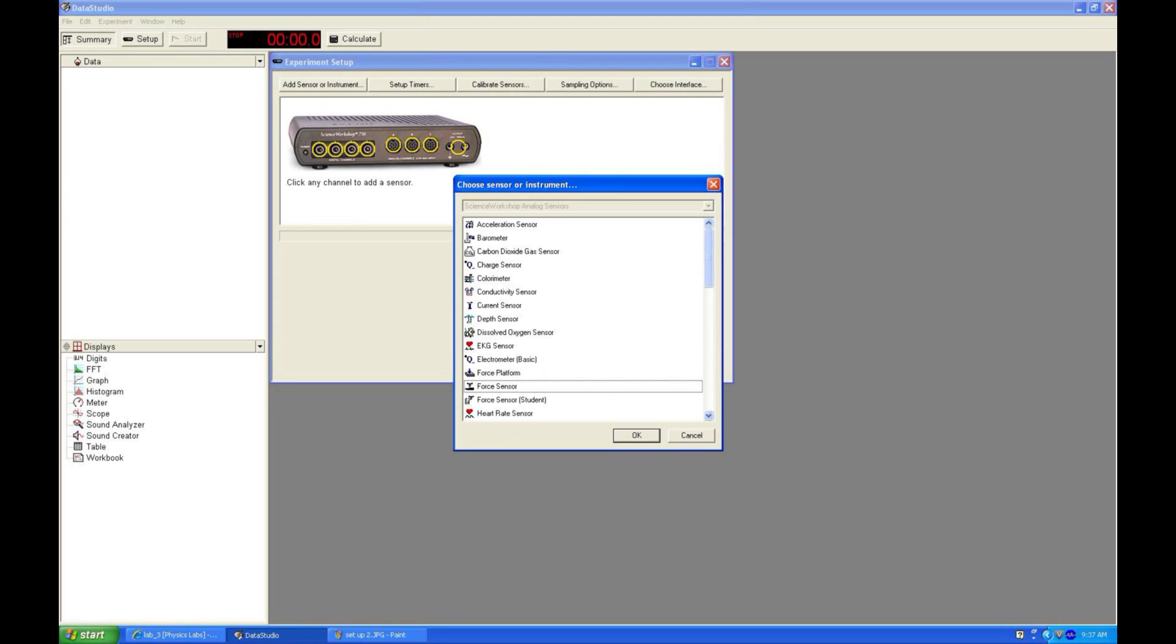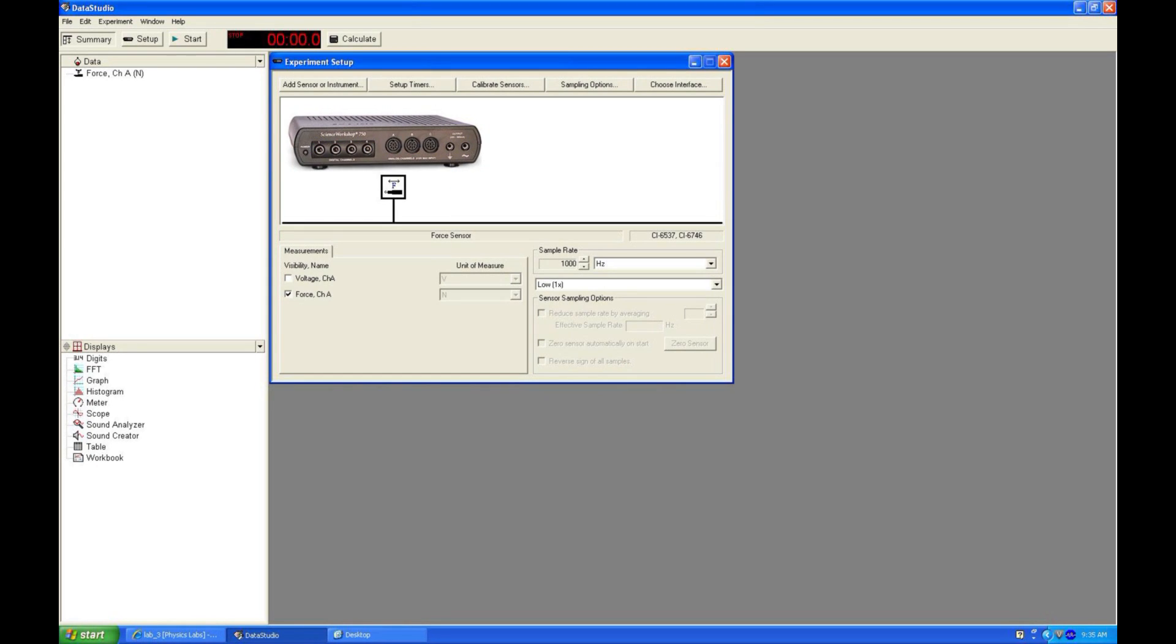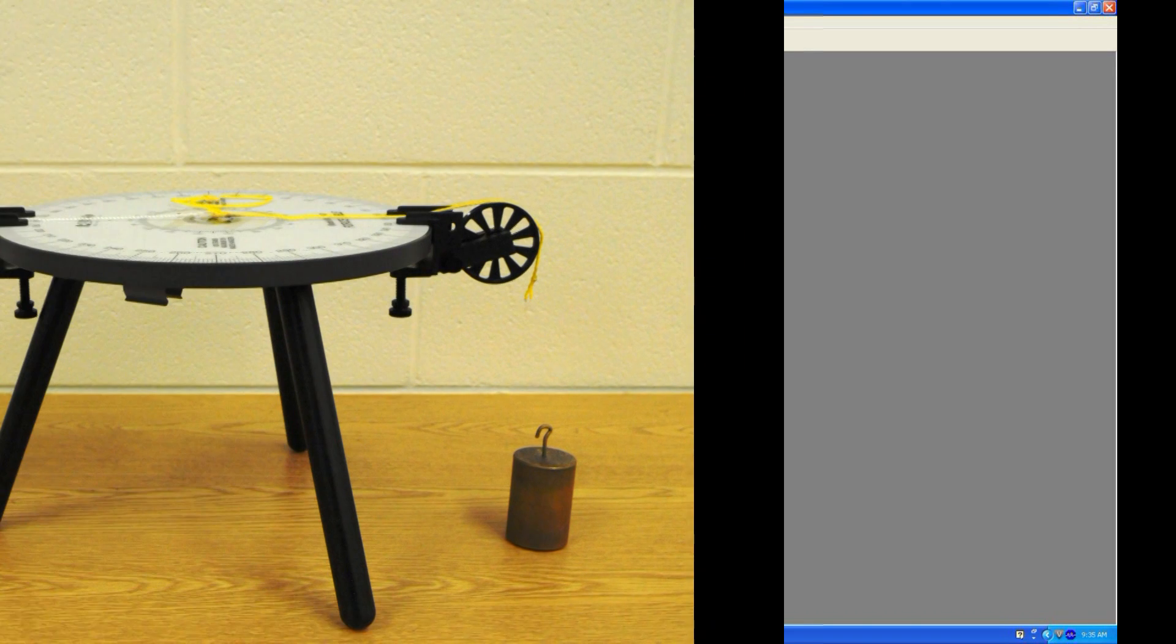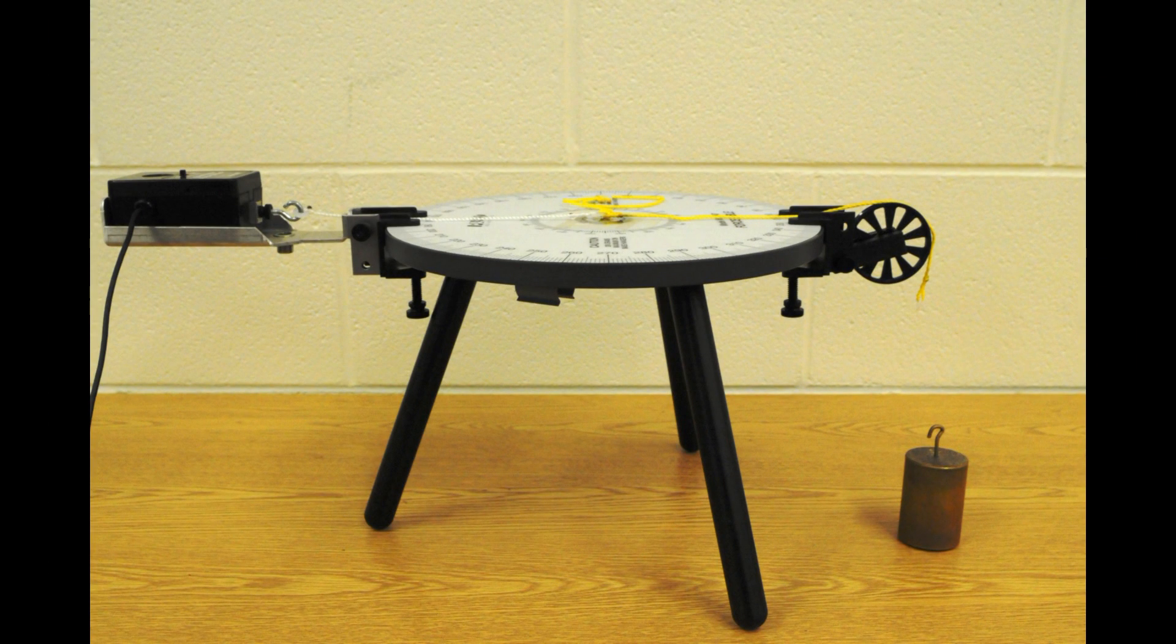In Data Studio, indicate that a force sensor is in use. Set the sample rate to a thousand hertz. These force sensors must always be calibrated before first use in a given lab.